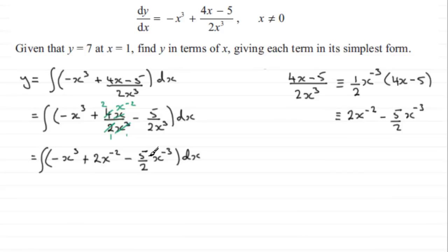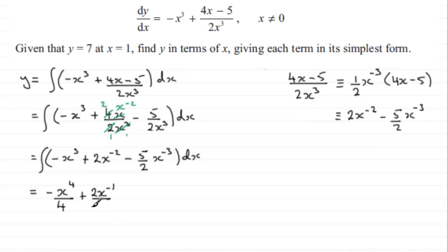Either way, let's now integrate in the usual way — add 1 to the power and divide by the new power. Minus x cubed becomes minus x to the power 4, divided by 4. For the next term, we add 1 to the power of minus 2 to get minus 1, giving 2x to the power minus 1, divided by minus 1. For the next term, we have minus 5 over 2; add 1 to the power minus 3 to get minus 2, giving x to the minus 2 divided by minus 2. And don't forget your constant of integration, plus c.